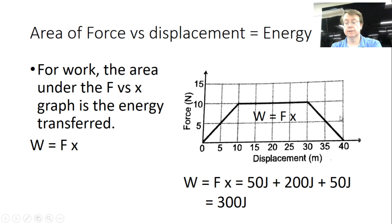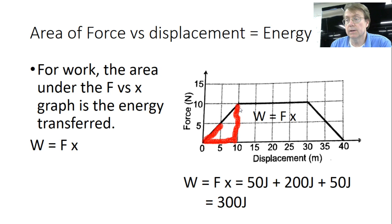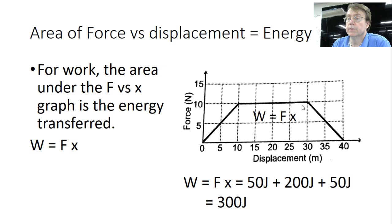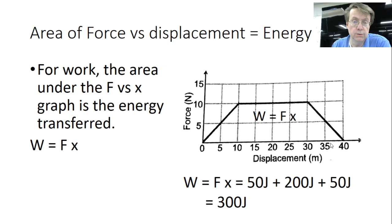From a force-versus-displacement graph, work equals the area under the curve. A triangle with base 10 m and height 10 N gives ½ × 10 × 10 = 50 J. A rectangle from 10 to 30 m with height 10 N gives 20 × 10 = 200 J. A final triangle with base 10 and height 10 gives another 50 J. Total work = 50 + 200 + 50 = 300 joules.